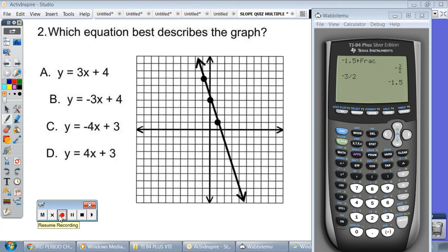Which equation best describes the graph below? So we're going to write y equals mx plus b. And I use two different colors, one color for m and one color for b. So let's start with b. b is where it crosses the y axis. So here's your y axis right here. And it crosses the y axis at this location.